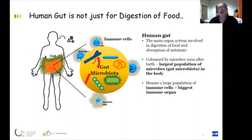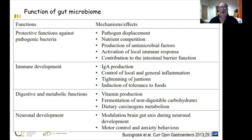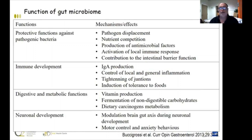The human gut is not just there for digestion of food — it contains gut microbiota that is important for immune system development. The functions of the gut microbiome are multiple: protective functions against pathogenic bacteria, immune development, digestive and metabolic functions. Last but not least, it's also important for neuronal development because the gut is called the little brain, and there is modulation of the brain-gut axis during neuronal development. Motor control and anxiety behaviors are dependent on the gastrointestinal microbiome.